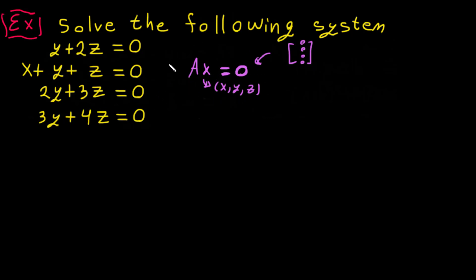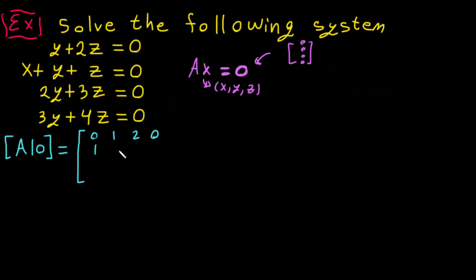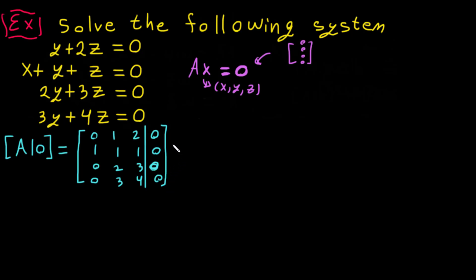Now we are solving this system. Here we have the augmented matrix — A means the coefficients, and this is called the augmented matrix. We write it like this: the rows are [0, 1, 2 | 0], [1, 1, 1 | 0], [0, 2, 3 | 0], and [0, 3, 4 | 0]. I put this dividing line and write it in purple.